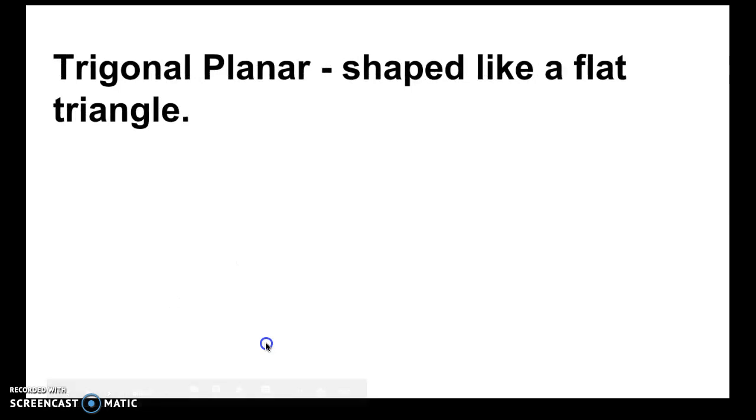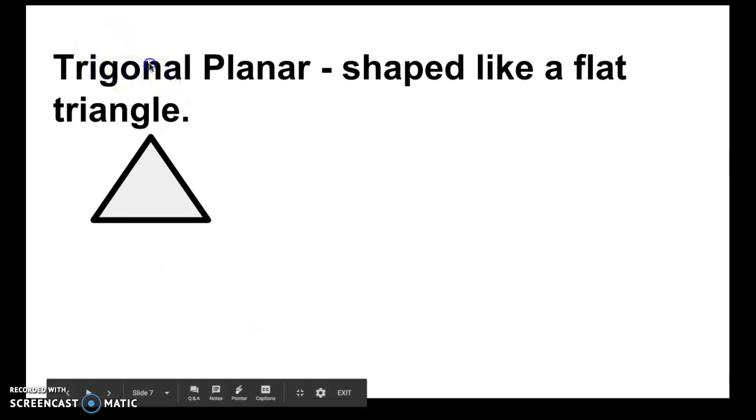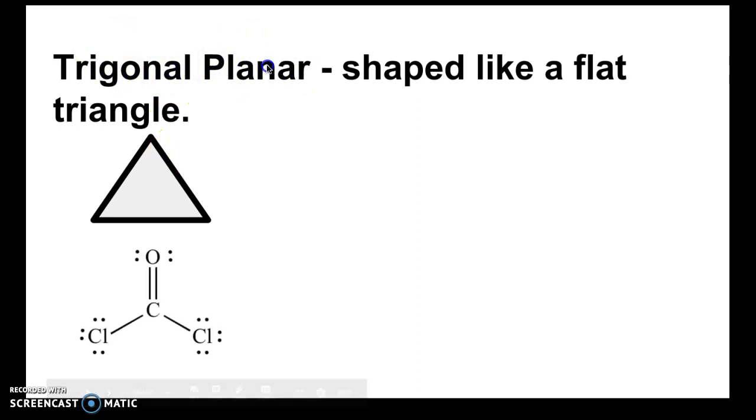Trigonal planar, it's shaped like a flat triangle. So that comes from two words, trigonal meaning triangle and planar meaning flat. So here's an example of a trigonal planar molecule, COCl2, also known as phosgene. And if you connect the terminal atoms together, you can clearly trace a triangle.